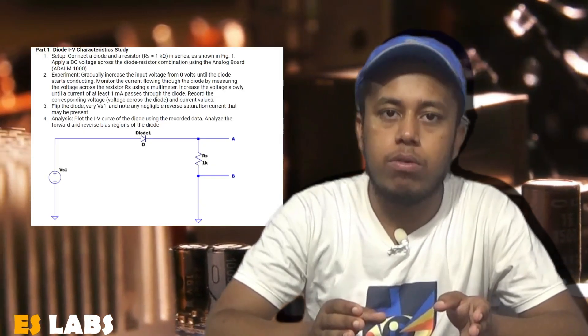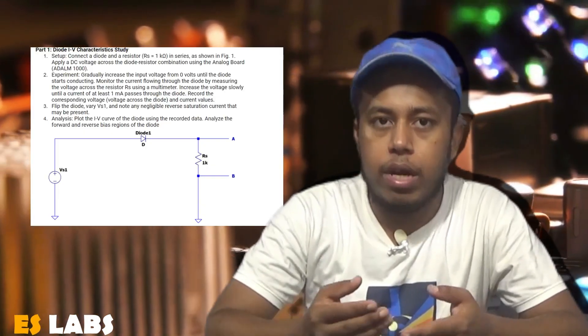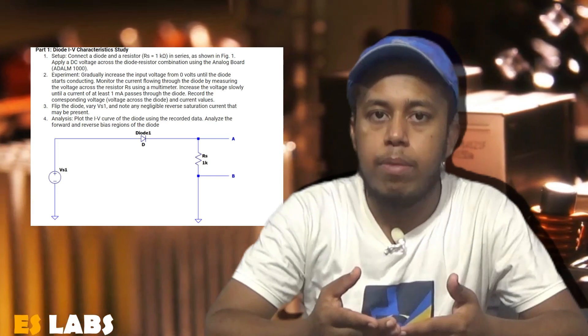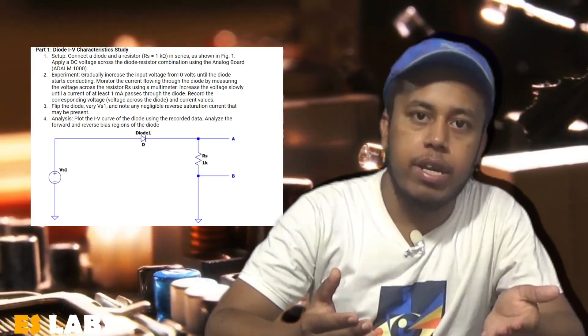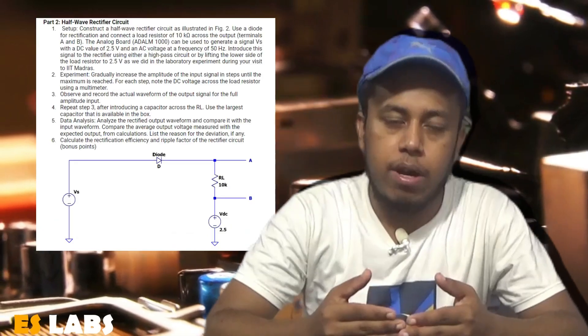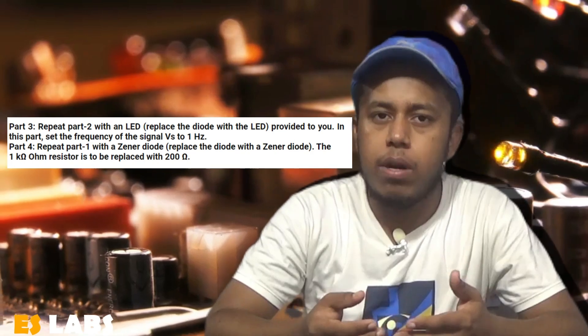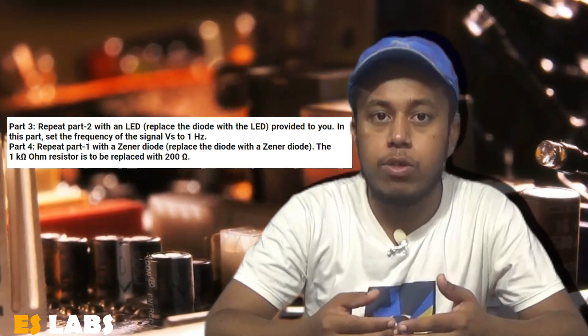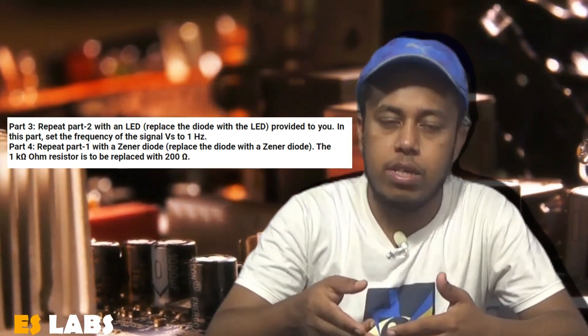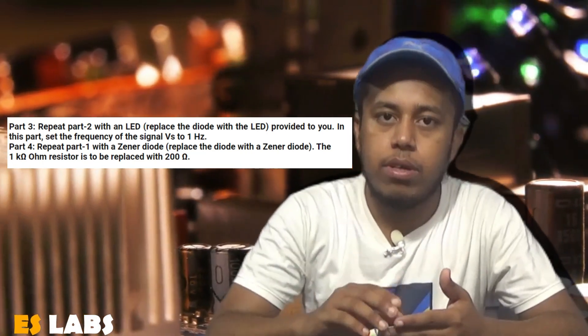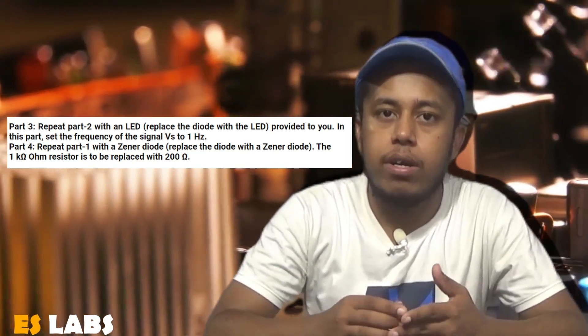This experiment is divided into four parts. In the first part, we find the diode forward voltage by connecting the diode with a 1K resistor in series. In the second part, we build a half-wave rectifier circuit. In the third part, we use an LED which blinks on each rising wave of the sine wave. In the fourth part, we deal with the Zener diode, and we also plot the IV characteristic graph for both the diode and the Zener diode.